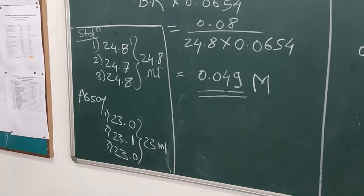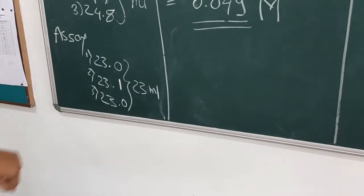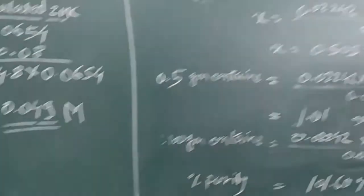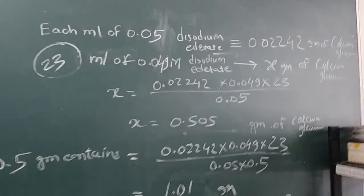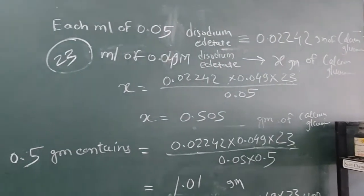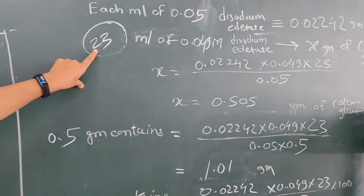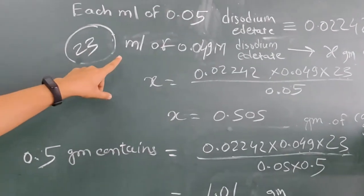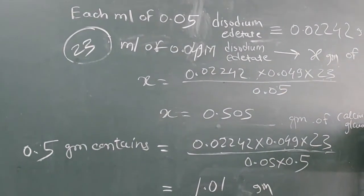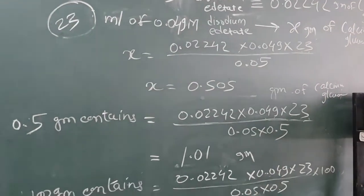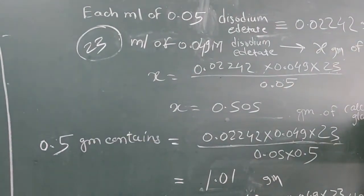Let's start with assay calculation. First of all, let's start with burette reading for assay. First is 23, then 23.1, 23. Mean is 23 ml. Factor given: each ml of 0.05 molar di-sodium EDTA is equivalent to 0.02242 grams of calcium gluconate. Now, for 23 ml, that means our burette reading of 0.049, that is calculated molarity of di-sodium EDTA, will give how many grams of calcium gluconate. So, by cross multiplication, we got x is equal to 0.505 grams of calcium gluconate.